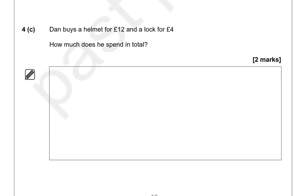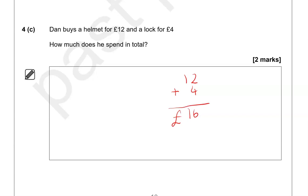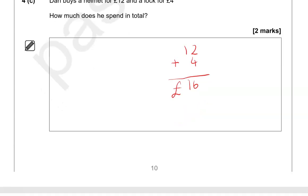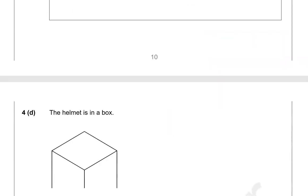Dan buys a helmet for £12 and a lock for £4. How much does he spend in total? That is 12 add 4. You can use a calculator — press 12, then the add symbol, then 4, then equals, and it should give you 16. So £16. It's important to get the unit, because it could have been 16 pence.